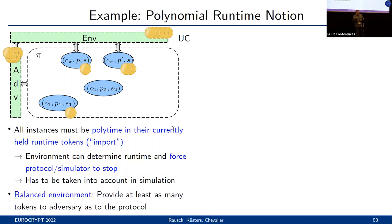To somewhat alleviate this issue, the UC model also requires environments to be balanced, so the adversary — and in particular the simulator — must receive at least as many runtime tokens as the protocol.